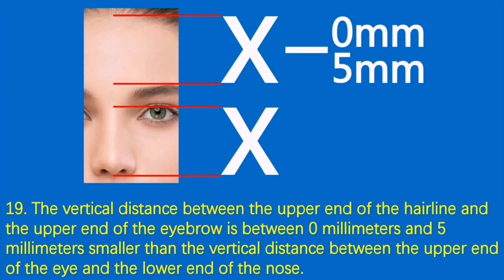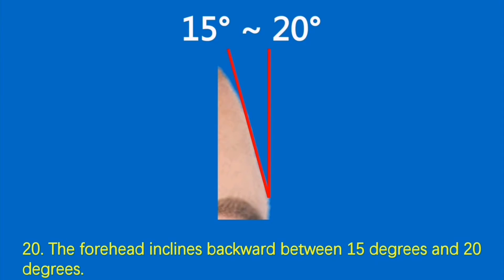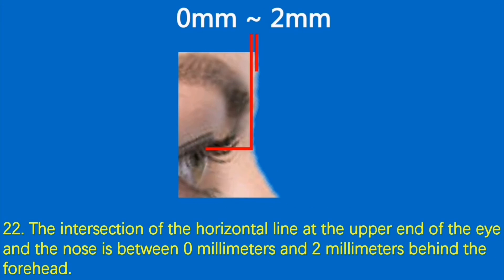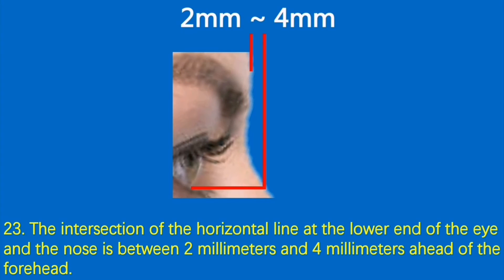Condition 19: The vertical distance between the upper end of the hairline and the upper end of the eyebrow is between 0 mm and 5 mm smaller than the vertical distance between the upper end of the eye and the lower end of the nose. Condition 20: The forehead inclines backward between 15 degrees and 20 degrees. Condition 21: The eye is between 6 mm and 1.2 cm behind the forehead. Condition 22: The intersection of the horizontal line at the upper end of the eye and the nose is between 0 mm and 2 mm behind the forehead. Condition 23: The intersection of the horizontal line at the lower end of the eye and the nose is between 2 mm and 4 mm ahead of the forehead.